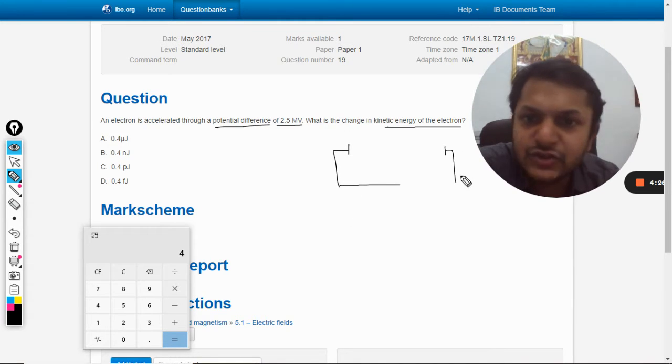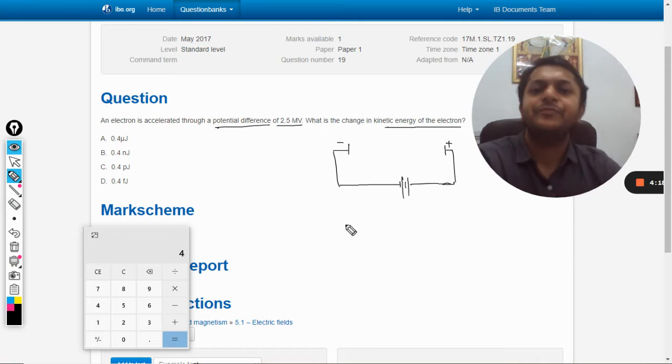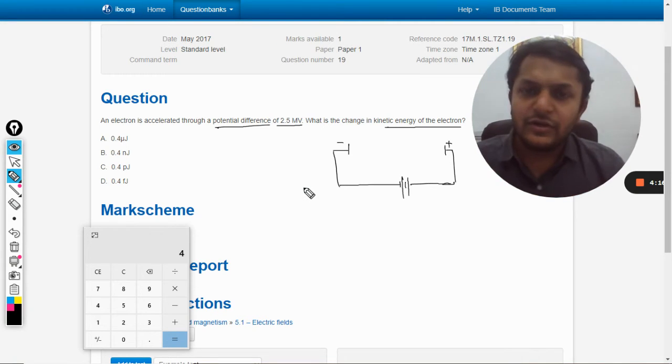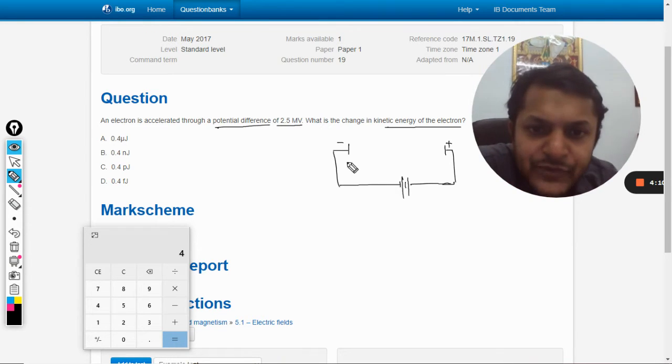There are these two electrodes and let us say this end is positive, this end is negative, so a very big battery is right here. This is a setup which is used to accelerate charged particles like electrons. So we are using this now. Let us say there is an electron here and the initial velocity for this is zero.